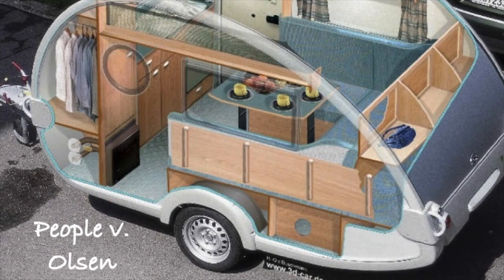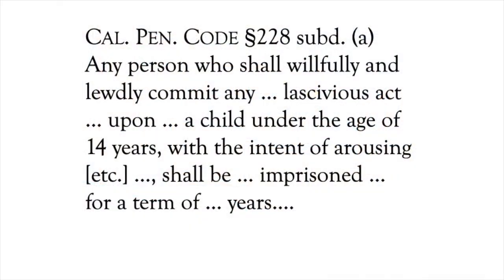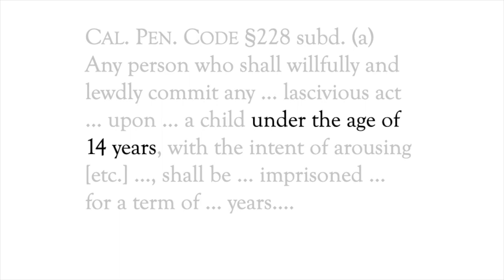The facts of Olson are intricate, and the testimony was contested. We want to focus on only one of the charges, which is the focus on appeal. Also for this exercise, let's assume we are in a Model Penal Code jurisdiction. Let's read the statute carefully: any person who shall willfully and lewdly commit any lascivious act upon a child under the age of fourteen years, with the intent of arousing et cetera, shall be imprisoned for a term of years. Our better practice will be to go directly to the material element or elements in dispute. In Olson, as in Prince, contention revolves around the age of the alleged victim element.